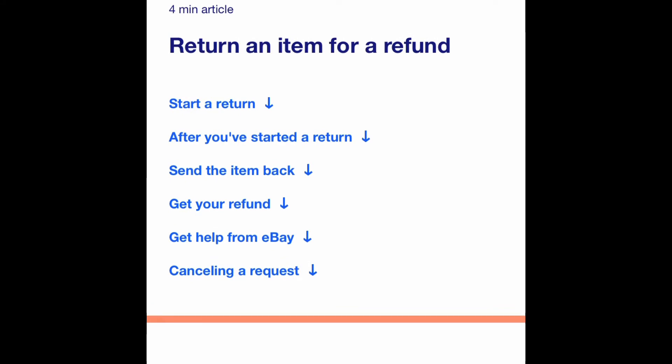The seller has different options: you can accept the return, at which point you'd buy a label on eBay or upload your own label so the buyer can ship the item back and get their refund. You can immediately issue a full refund, or give a partial refund — usually in cases where shipping it back doesn't make sense because it's a cheap item or the item is destroyed. You can also dispute the transaction and send it to eBay for a decision, but historically they side with the buyer unless the seller has a really strong case.